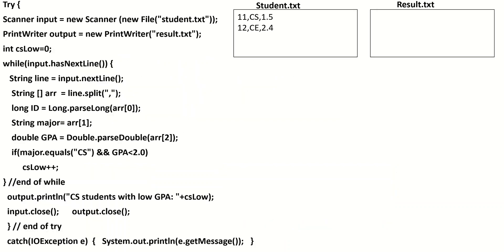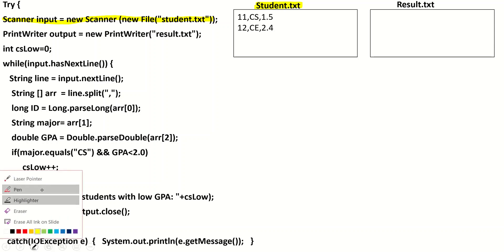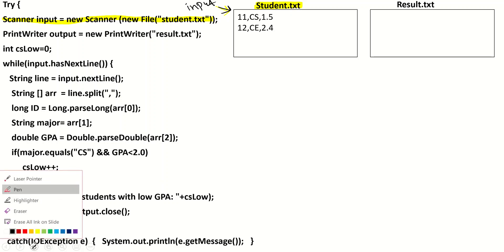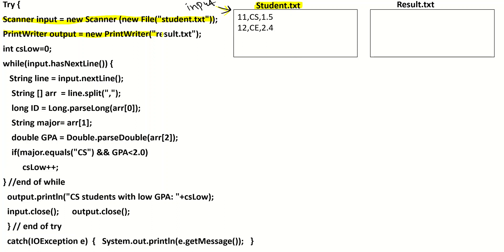Let's assume we have student.txt with only two lines and result.txt where we write the result. The first statement: Scanner input = new Scanner(new File("student.txt")). This means we are opening student.txt for reading and calling it input. The other statement: PrintWriter output = new PrintWriter("result.txt"), which means opening this file for output and referring to it as output. The first file is for reading, the second file is for output.